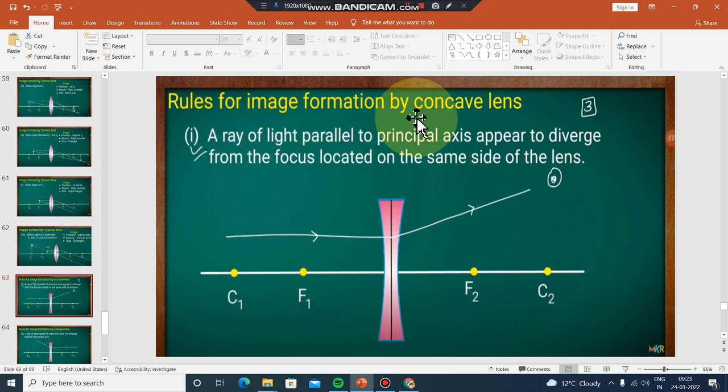Rules for image formation by concave lens. The concave lens is similar to a convex mirror - it's a diverging lens. The concept is the same.